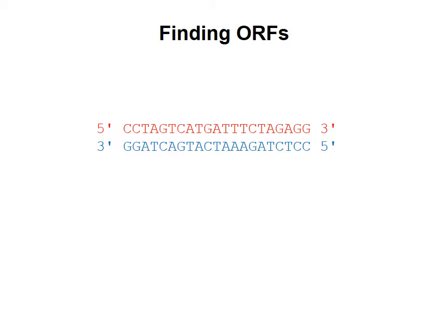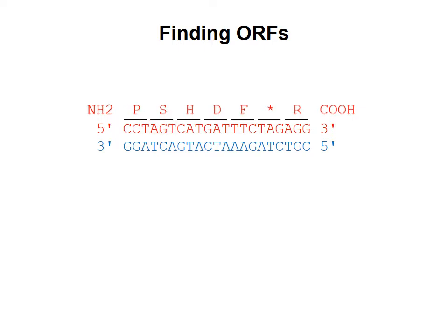When looking for open reading frames, it's important to recognize the number of different possible open reading frames that exist for a given piece of DNA. Here I'm showing a short piece of DNA, and one possible protein translation of this section is shown above the DNA sequence. For example, the codon CCT encodes for proline, the next codon AGT codes for serine, and we can keep this possible protein translation in mind.